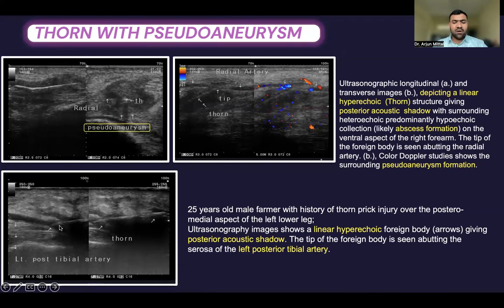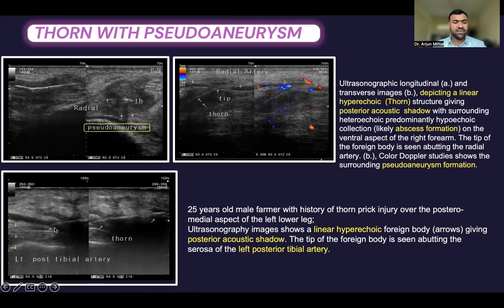In this case of a 25-year-old male farmer with history of thorn prick injury over the posterior medial aspect of the left lower leg, ultrasonographic images show a linear hyperechoic foreign body giving posterior acoustic shadow. The tip of the foreign body is seen abutting the serosa of the left posterior tibial artery.